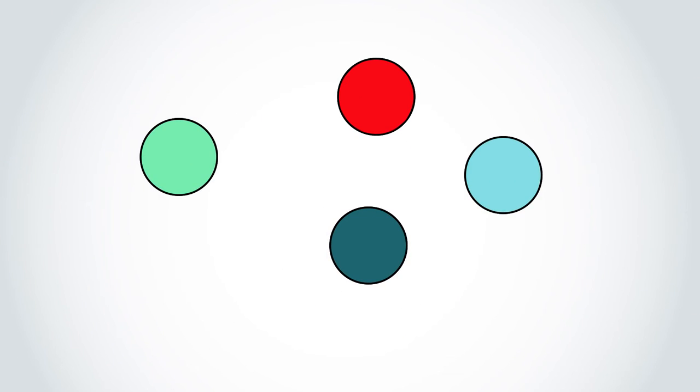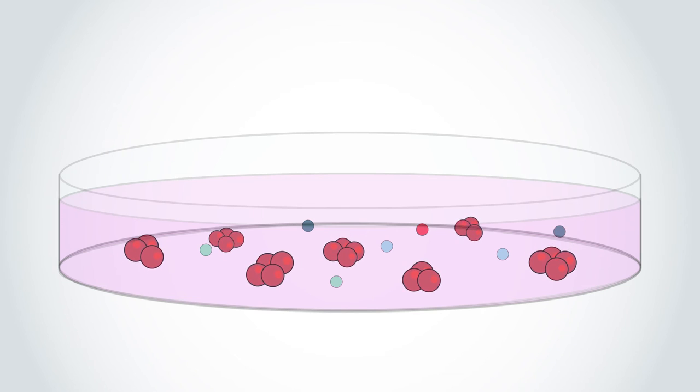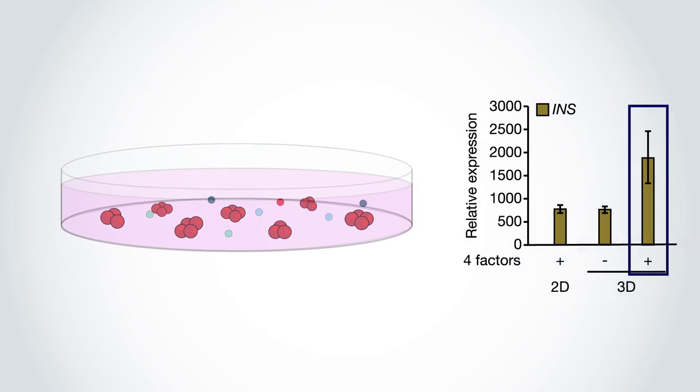So the researchers tried the four-factor mix again, but this time let the cells grow in three-dimensional culture, instead of along the 2D plate. This 3D culturing mimics the microenvironment cells experience in the body during development, and it did the trick.